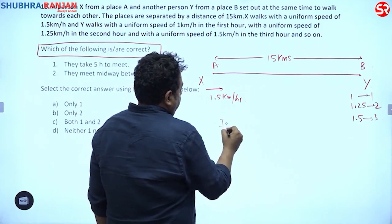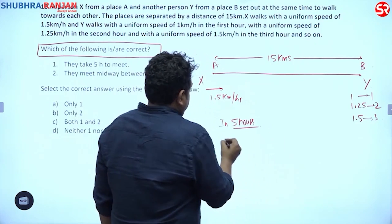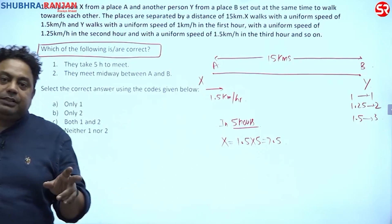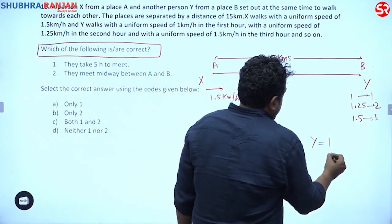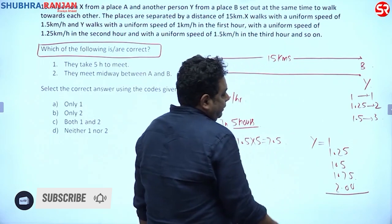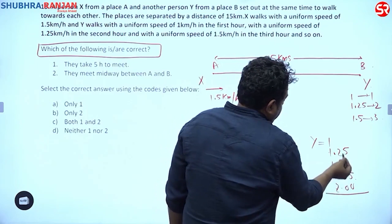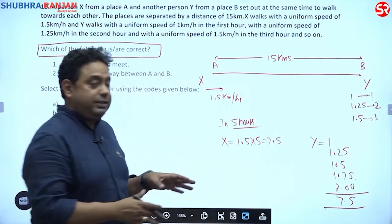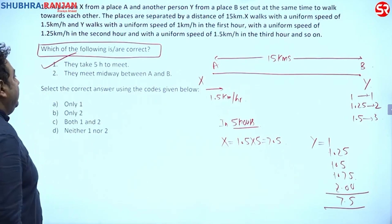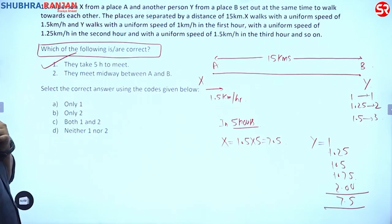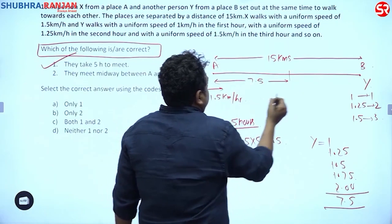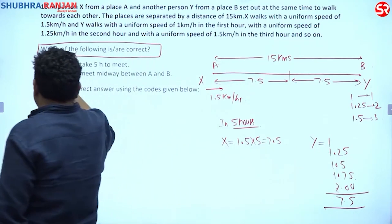In five hours, X travels 1.5 × 5 = 7.5 km. Y travels 1 + 1.25 + 1.5 + 1.75 + 2 = 7.5 km. Together that's 7.5 + 7.5 = 15 km, which equals the distance between A and B. So they meet in exactly 5 hours, and since both travel 7.5 km, they meet exactly midway between A and B.